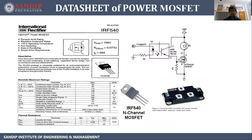Looking at the datasheet of a power MOSFET, here is an example: the IRF540, which is an N channel power MOSFET. Its key parameters are: VDSS (drain-to-source voltage with shorted gate) = 100 V, drain-to-source on-resistance = 0.077 Ω, and drain current = 28 A.